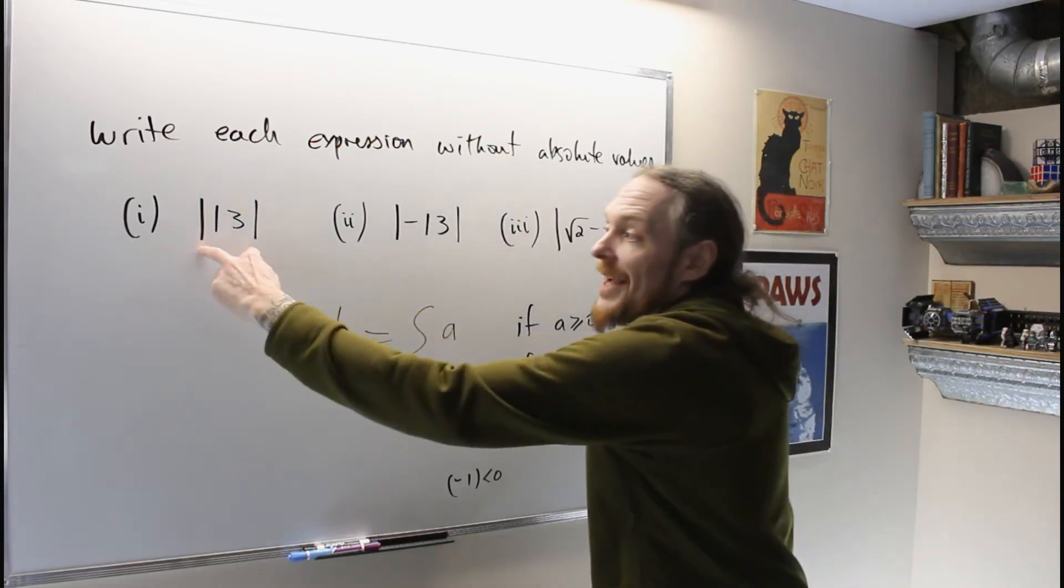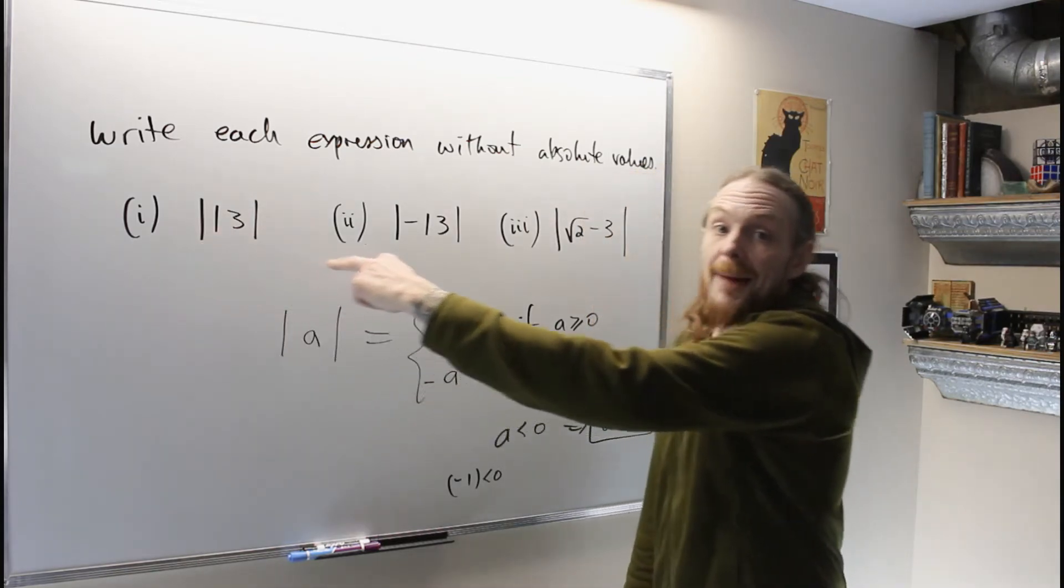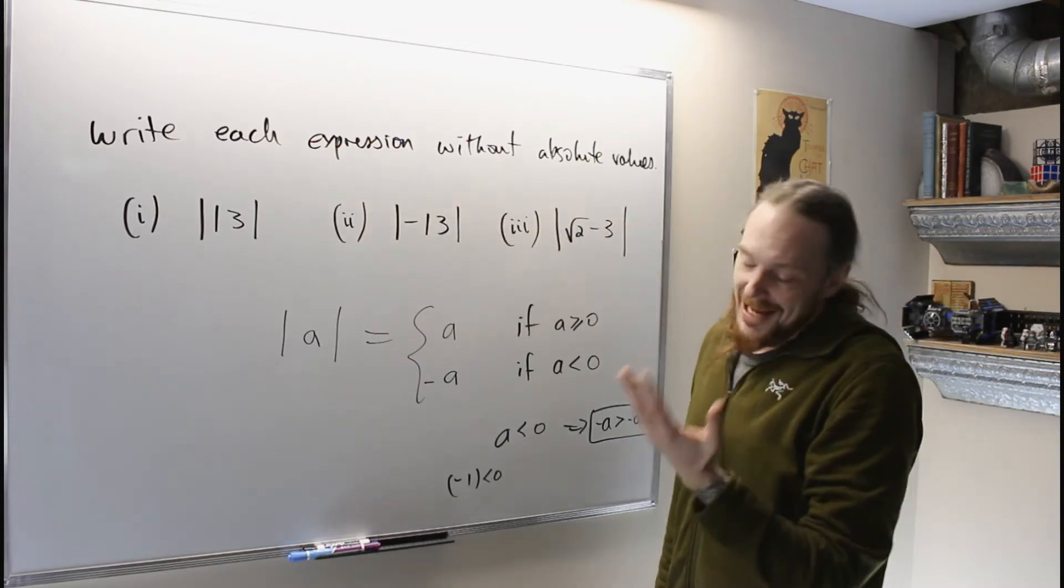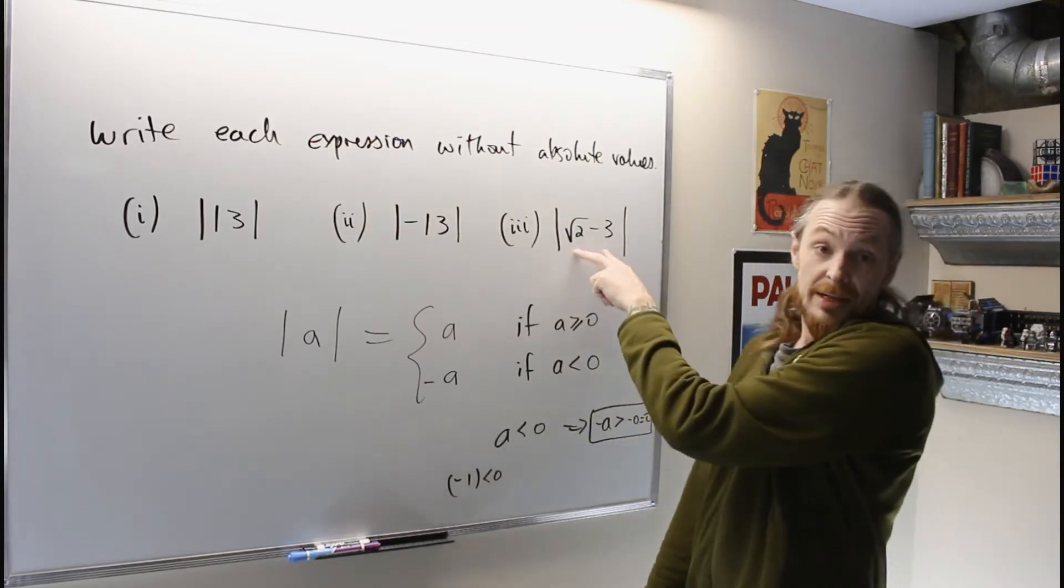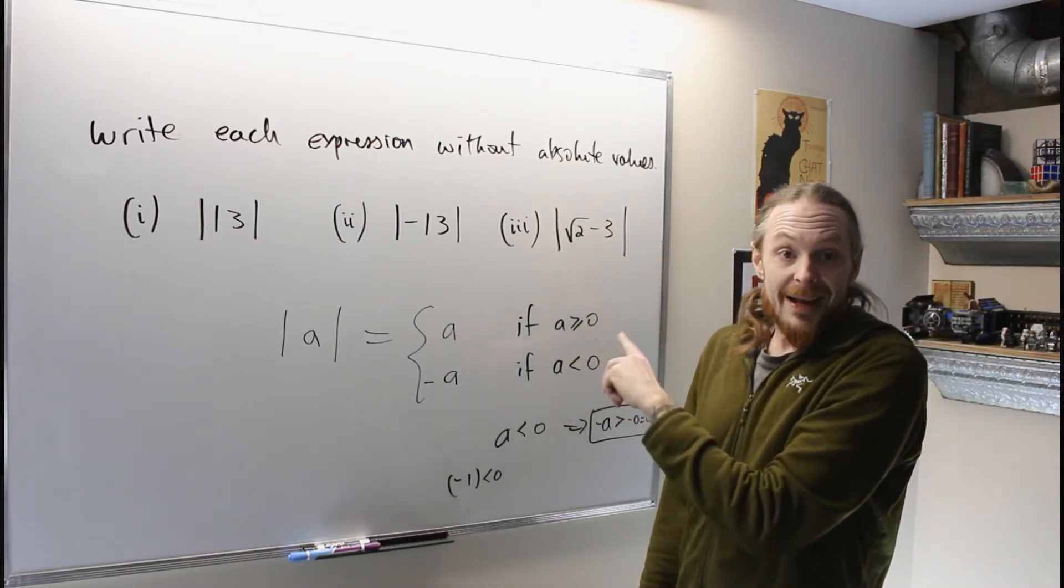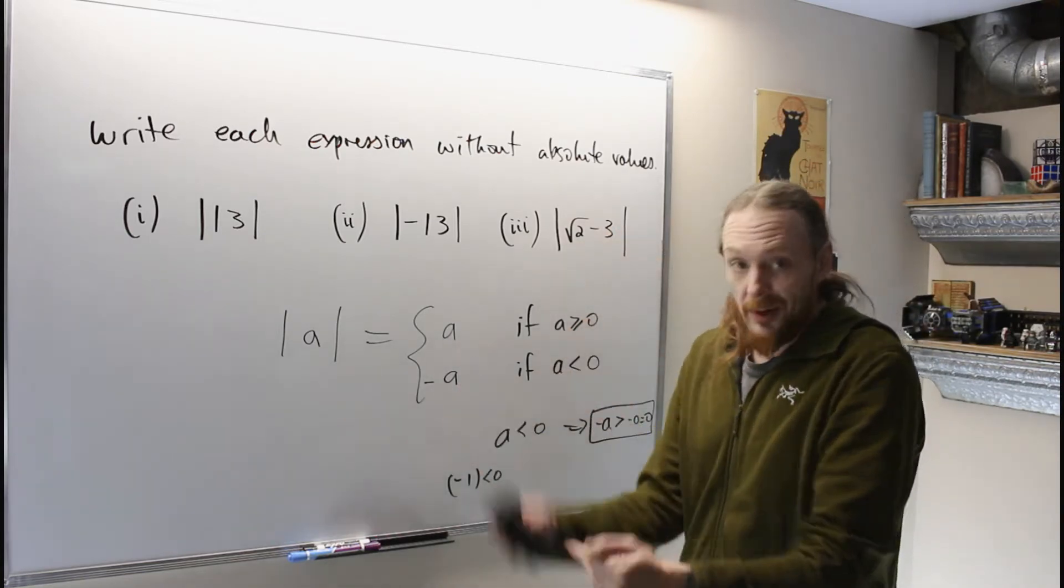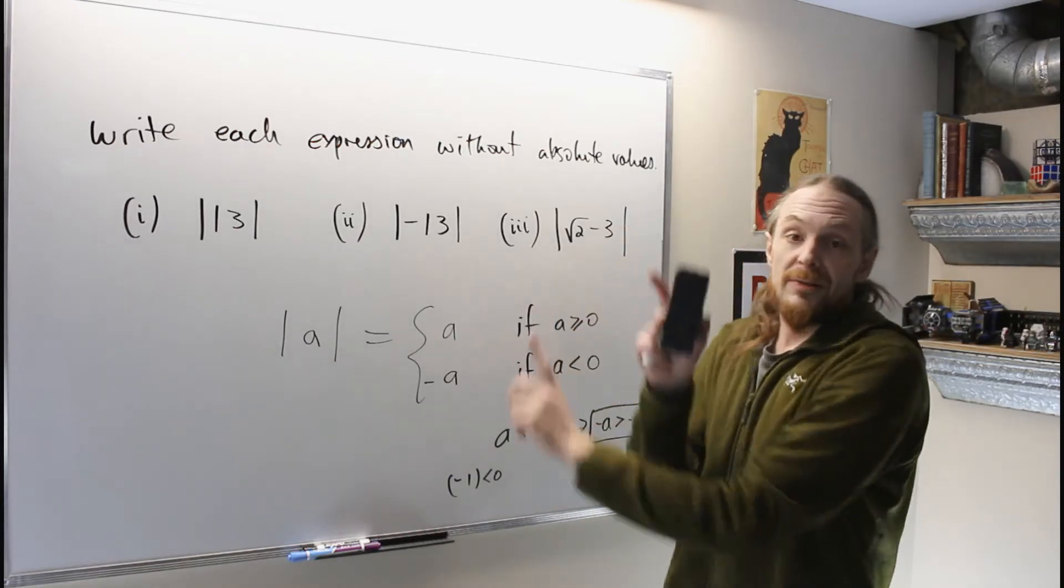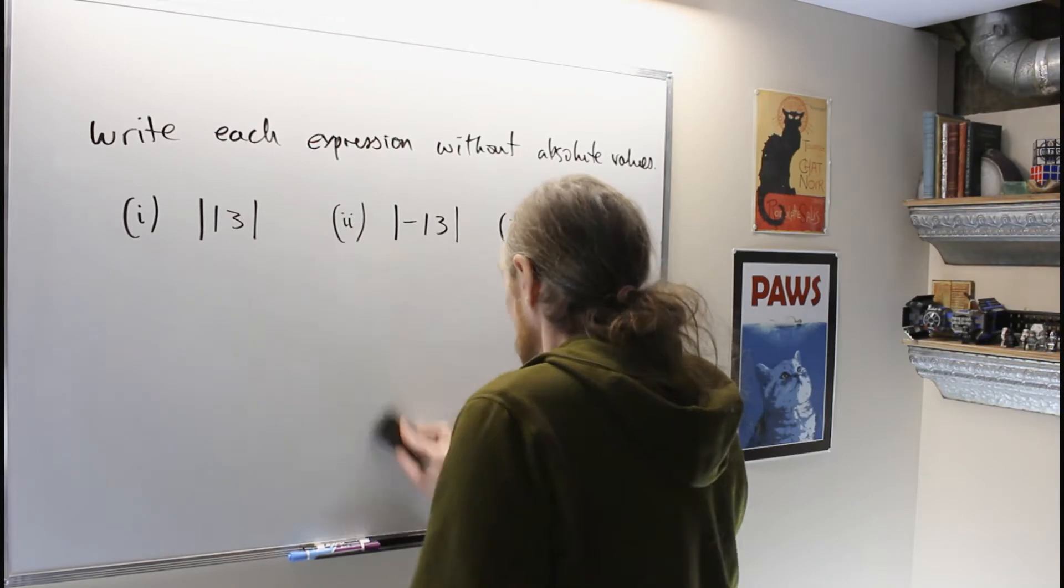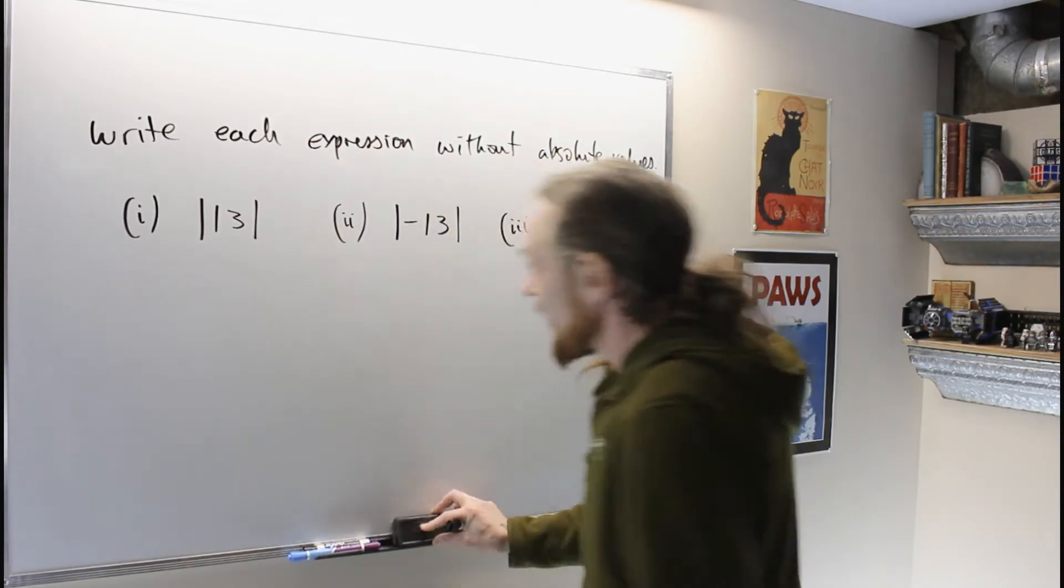Absolute value is the positive maker. So every time we ask how do I get rid of the bars, I'm asking is that thing on the inside positive or negative. We're going to have to do a side calculation to find that out. If he's positive, I could just get rid of the bars. If he's negative, all I have to do is flip it around and make it positive.